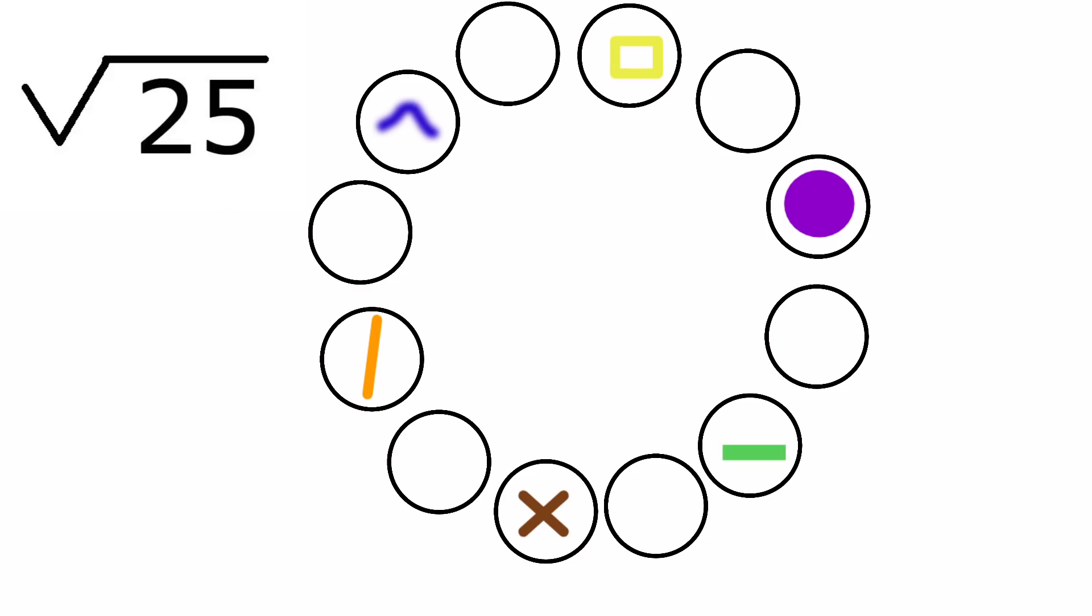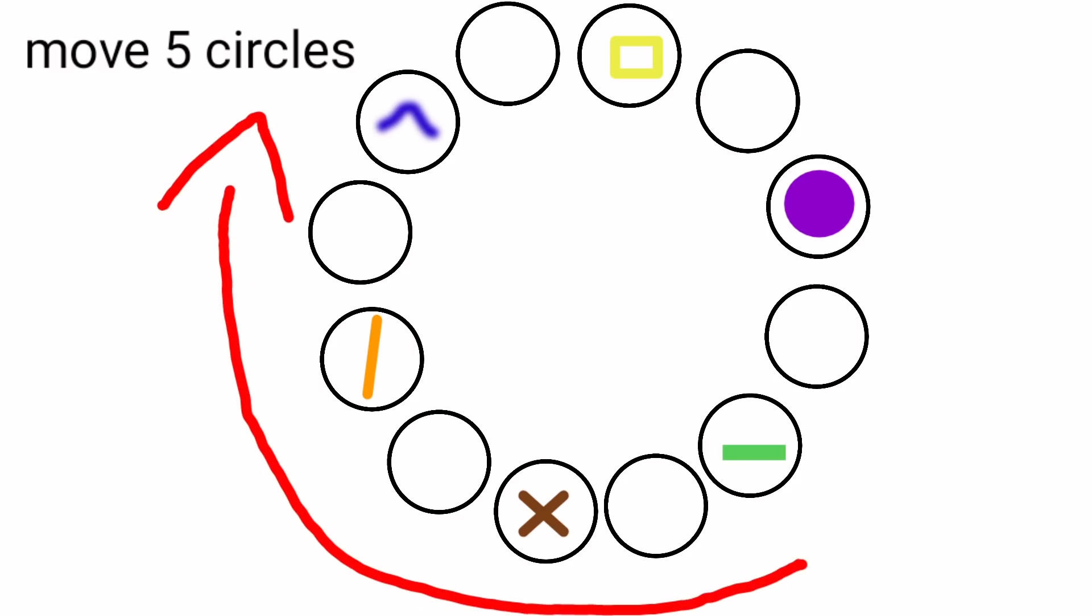Okay. What is the square root of 25? Right. 5. Move 5 circles from where you are, but in this direction.